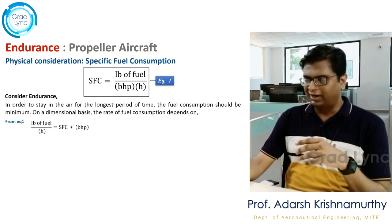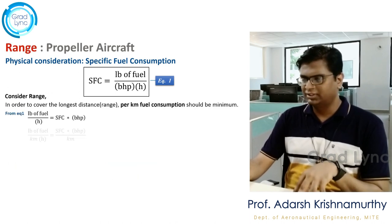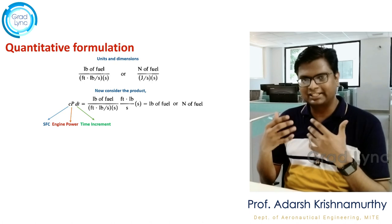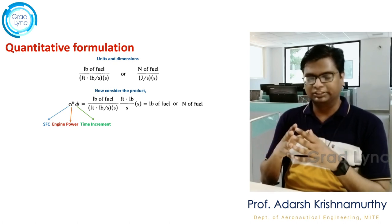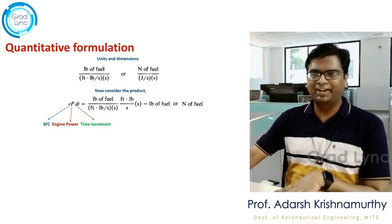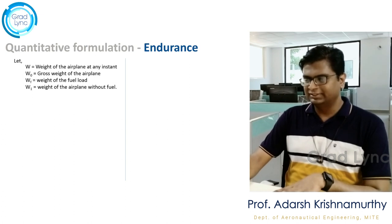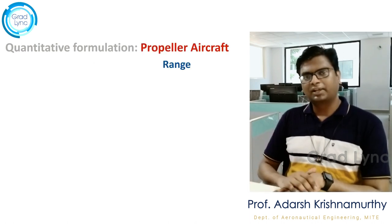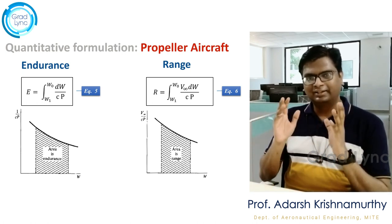Then we moved on to understand the conditions for range and endurance for propeller aircraft. We introduced a product c × P × dt, where c is the specific fuel consumption, P is the power available — which is the same as the power required at a given velocity — and dt is the increment in time. This product gives the decrement of fuel weight with respect to time dt. Then we derived the quantitative formulation for both range and endurance, understanding that the area under certain curves represents each respective quantity.